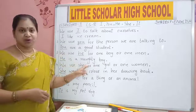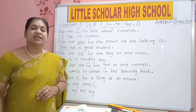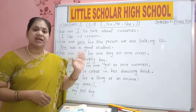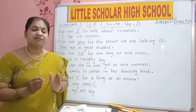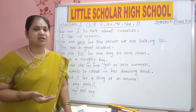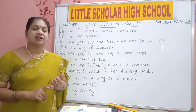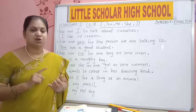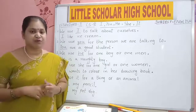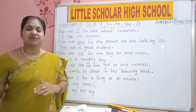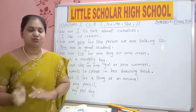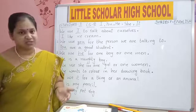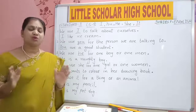We use HE for all the boys and men. He is my grandfather. He is my uncle. He likes to color the pictures. Ravi is a good boy. Ravi goes to school every day. Every time we won't say Ravi, Ravi, Ravi. First time we will say Ravi is a good boy, then: he likes to eat chocolate, he likes to go to school every day, he likes to color his pictures. HE is used for boys and all the men.